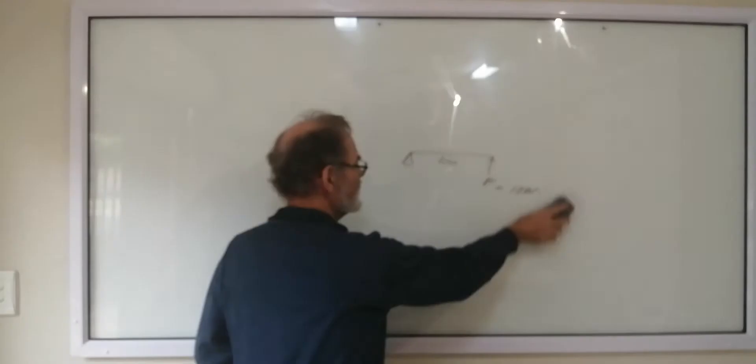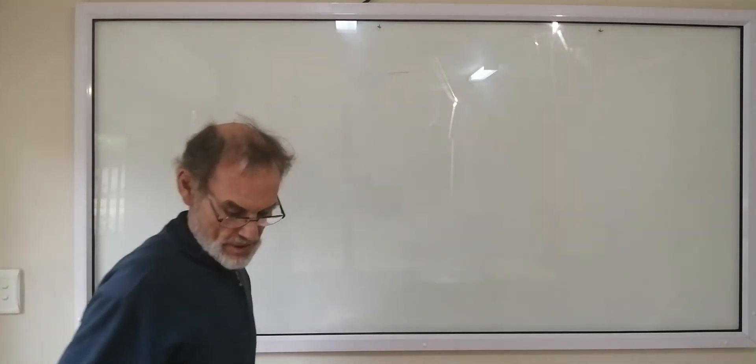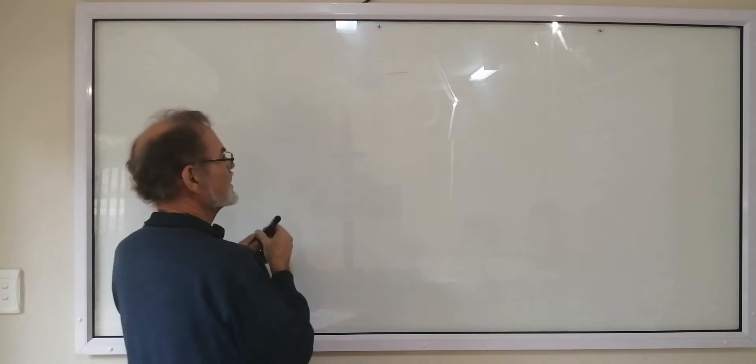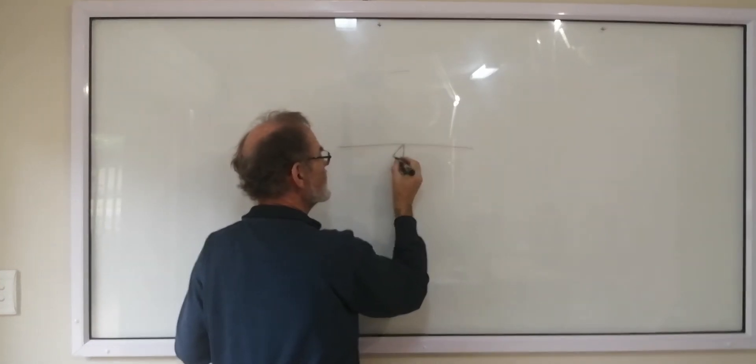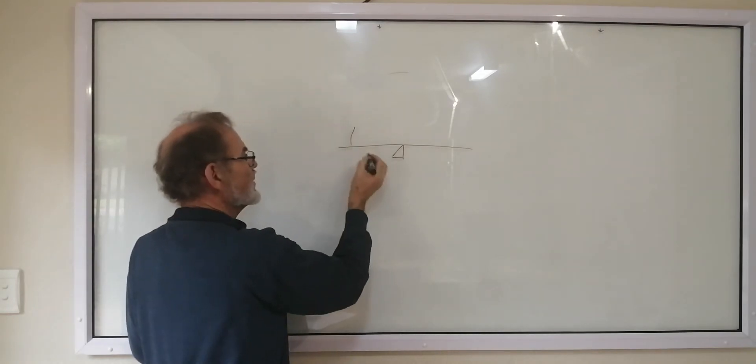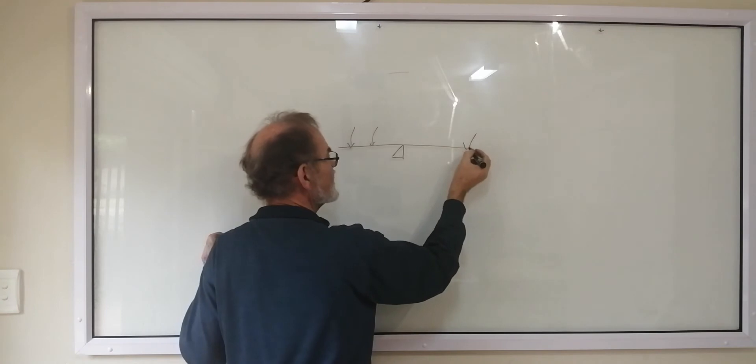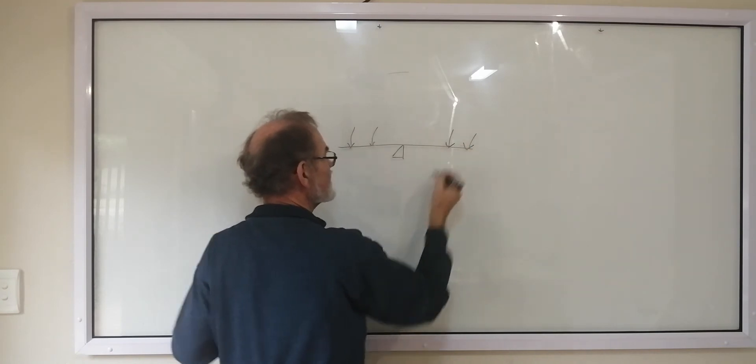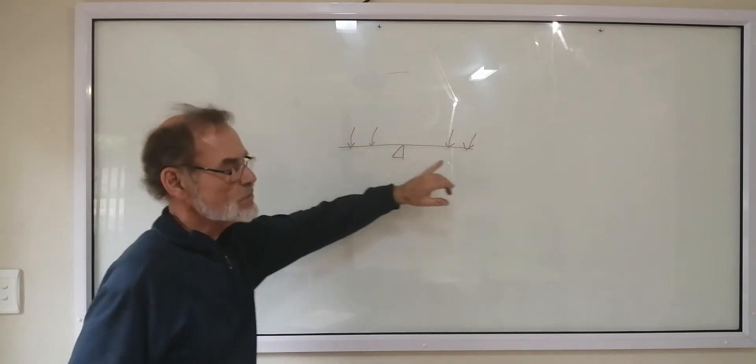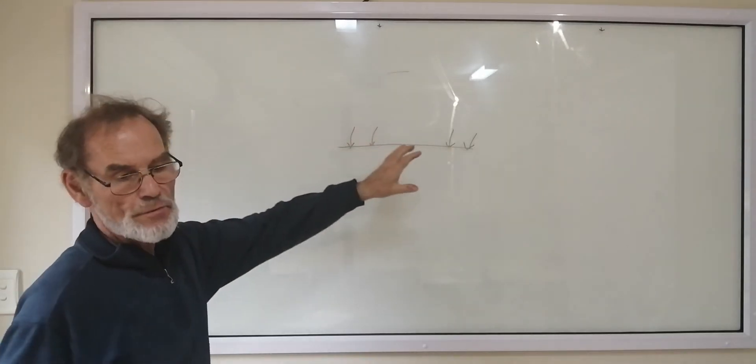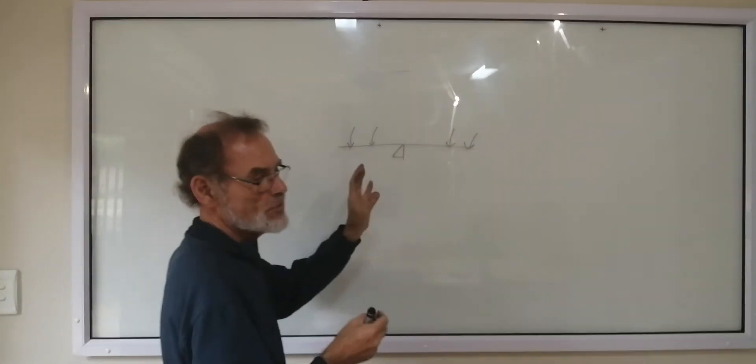So if we have a beam like this, or it could be a seesaw, or a ruler, or anything, and we have forces, random forces pressing down on here, these different forces may not be in equilibrium. So this may or may not be turning.